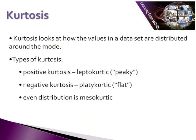Kurtosis is the second way that we measure the distribution of our data. Kurtosis looks at how the values in our dataset are distributed around the mode — the most frequently occurring value in a distribution. There are a number of different types of kurtosis: we have positive kurtosis, where things look a little peaky; we have negative kurtosis, where our distribution looks very flat; and if things are evenly distributed, we have what's called mesokurtic. We're going to have a look at some examples of these.